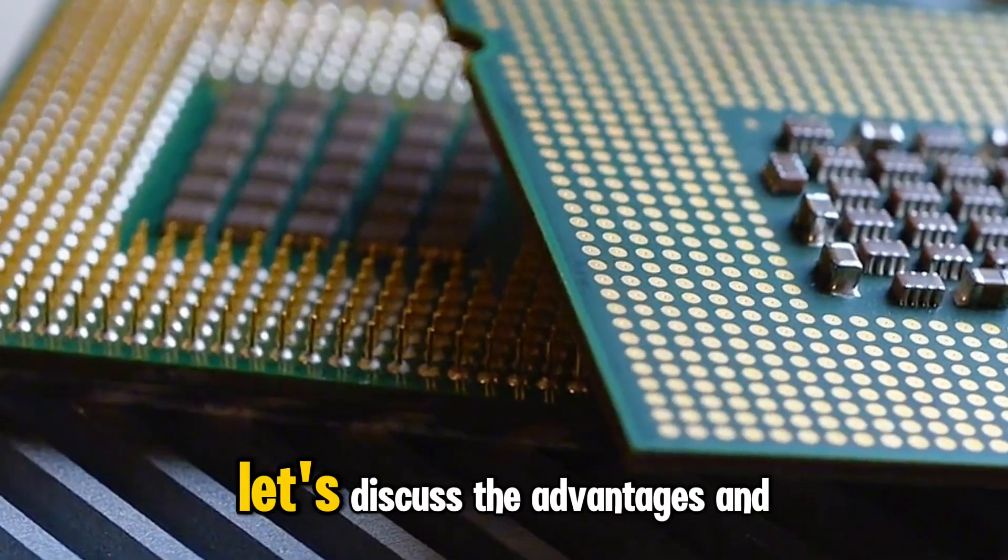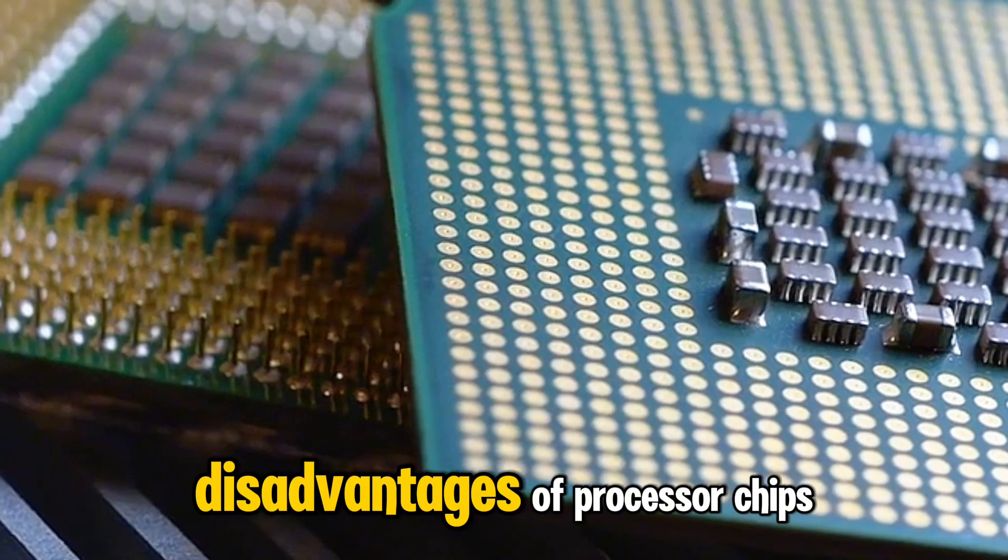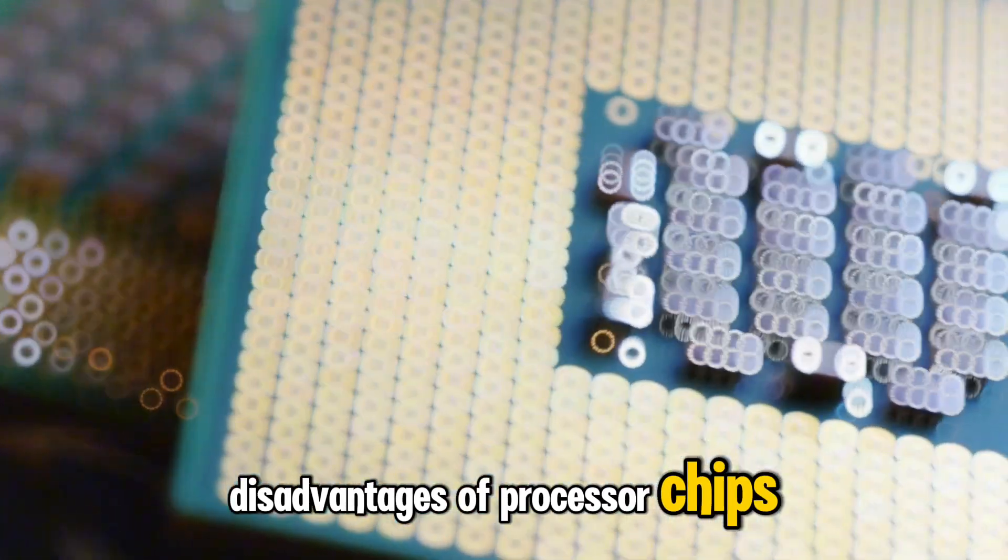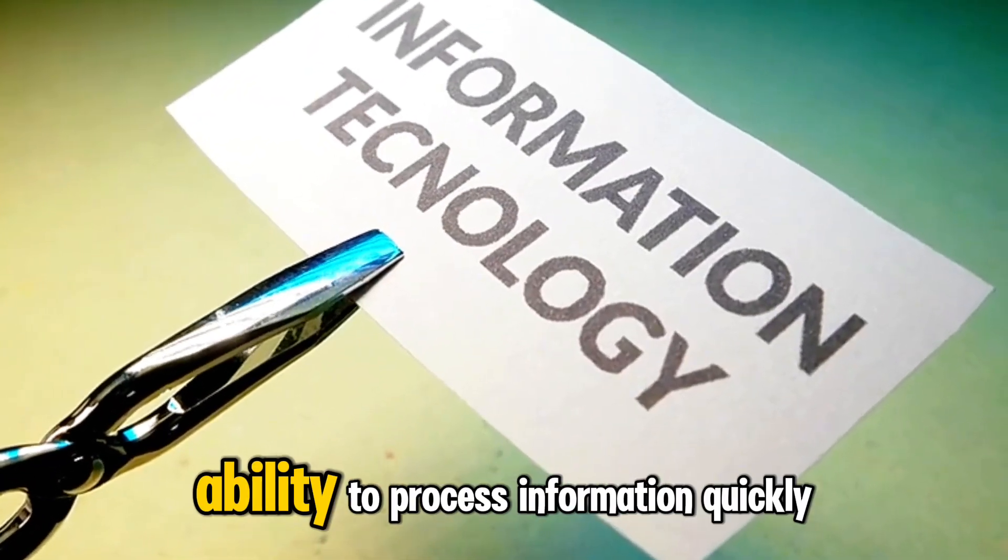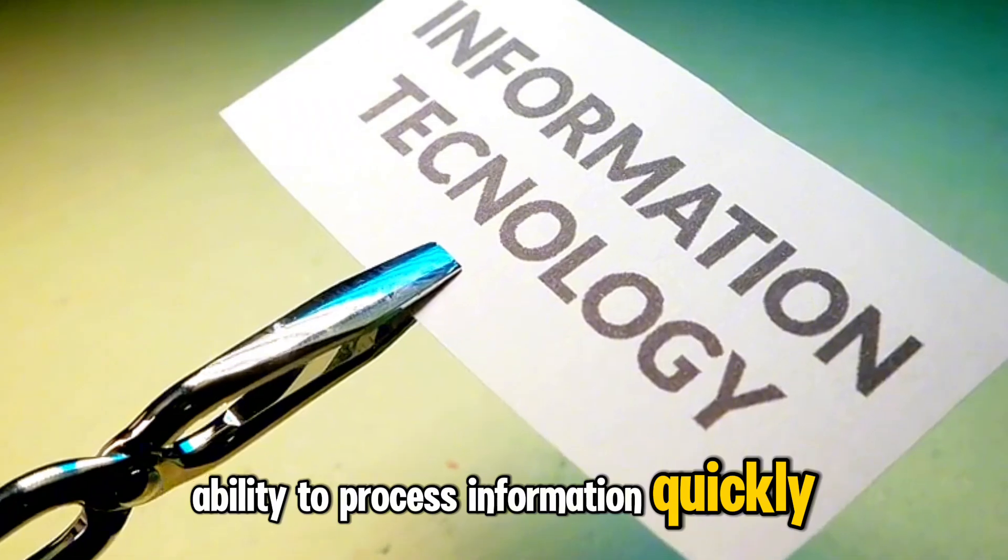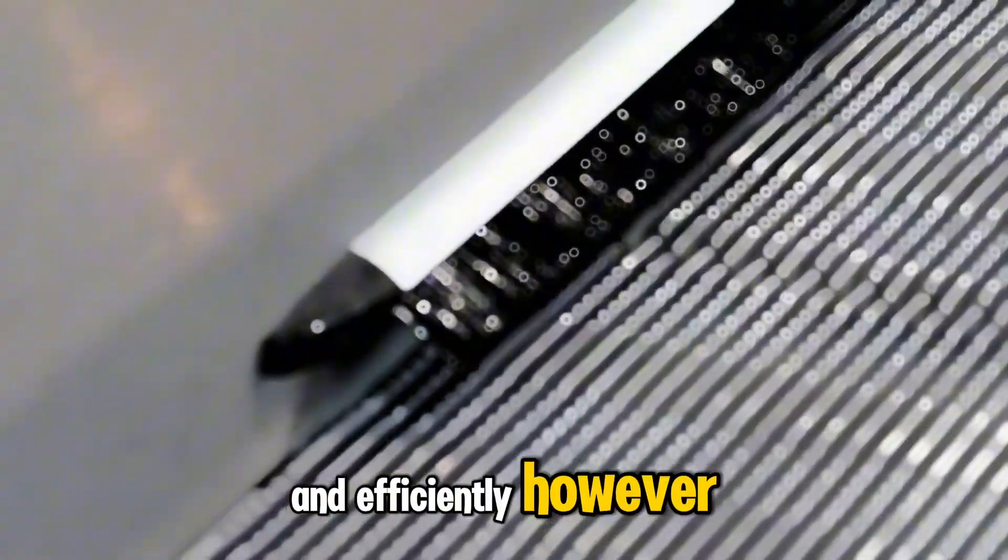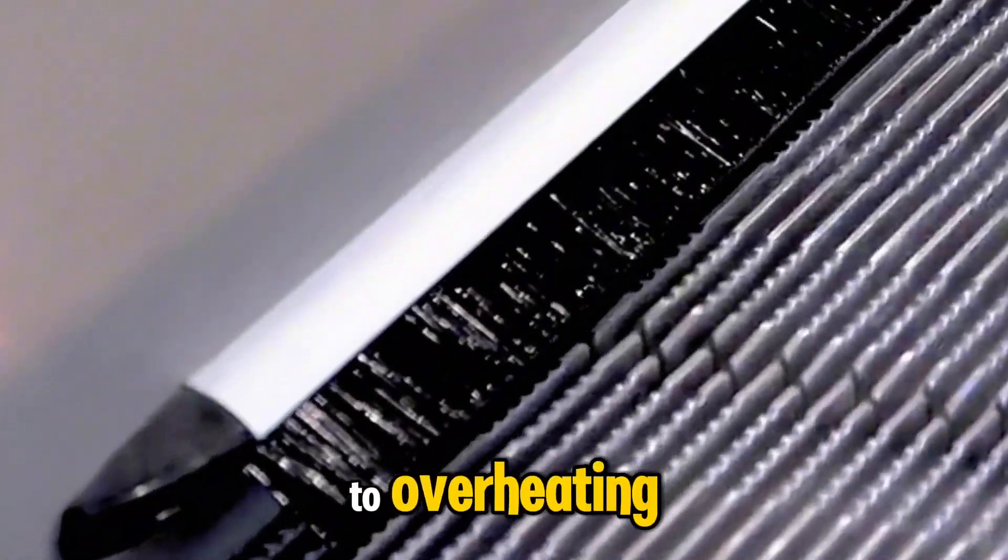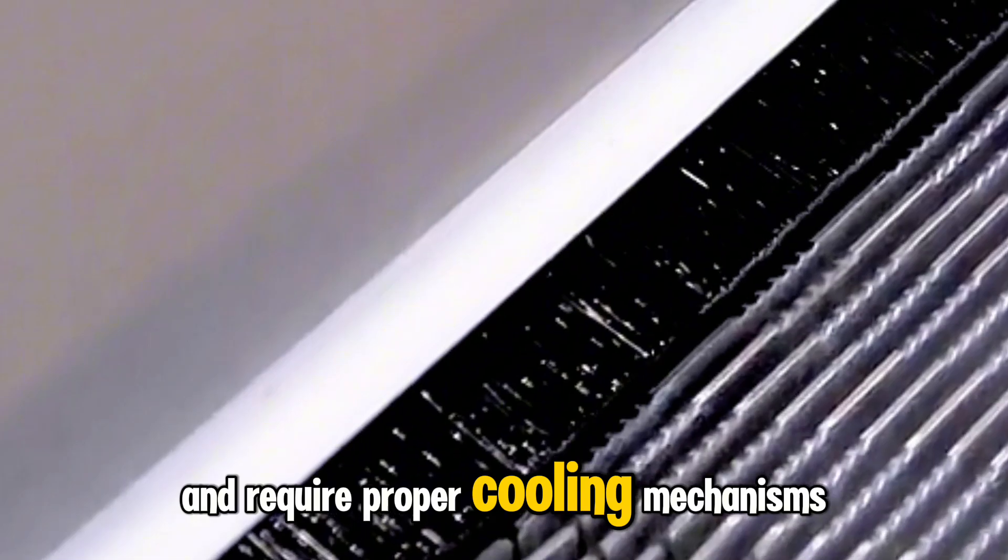Lastly, let's discuss the advantages and disadvantages of processor chips. The main advantage is their ability to process information quickly and efficiently. However, they can also be prone to overheating and require proper cooling mechanisms.